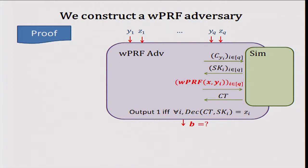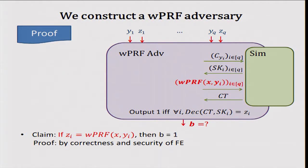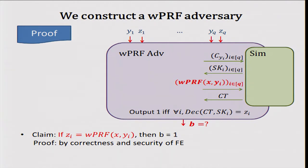In case one, if the weak PRF adversary gets Z_i which are actual weak PRF evaluations, then what the simulator gets is this function evaluated on key X and different inputs y_i. I claim that B is going to be one with all but negligible probability. This follows from the correctness and security of the functional encryption scheme: given a ciphertext and all the secret keys, I should get Z_i — otherwise I can distinguish the simulator's output from the real world.